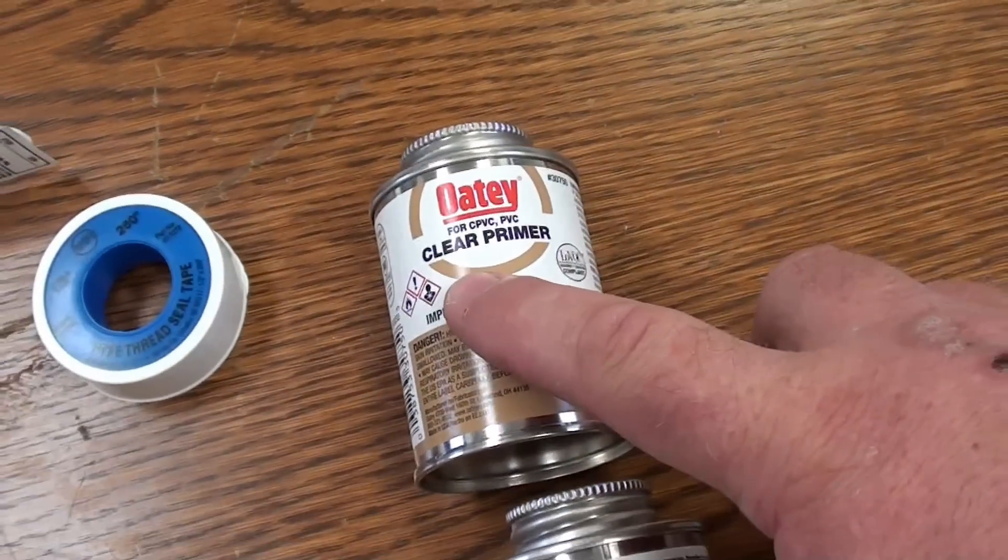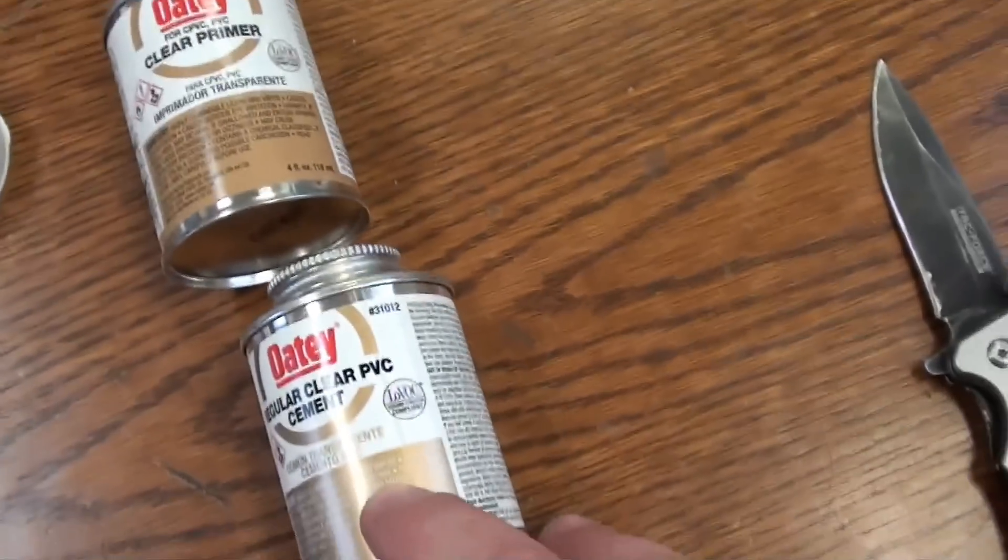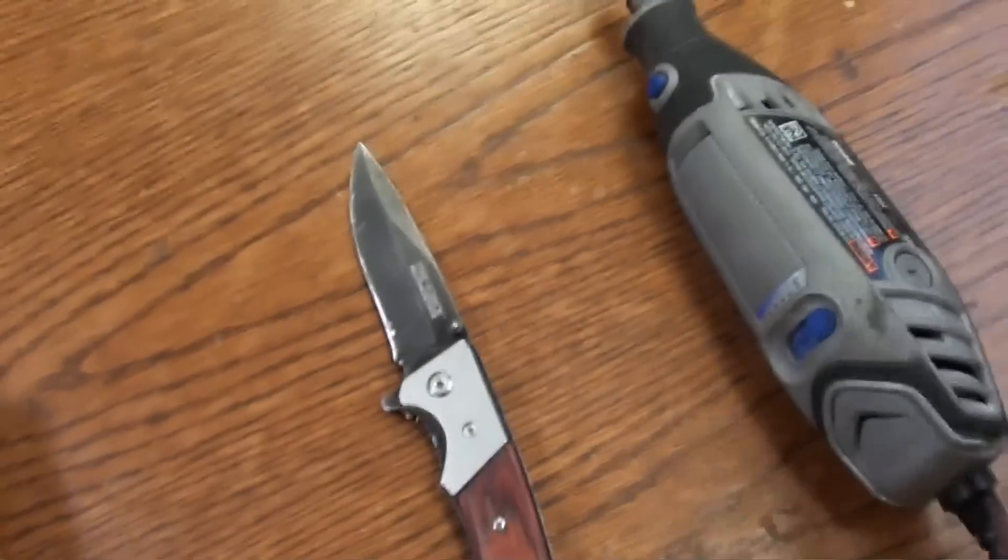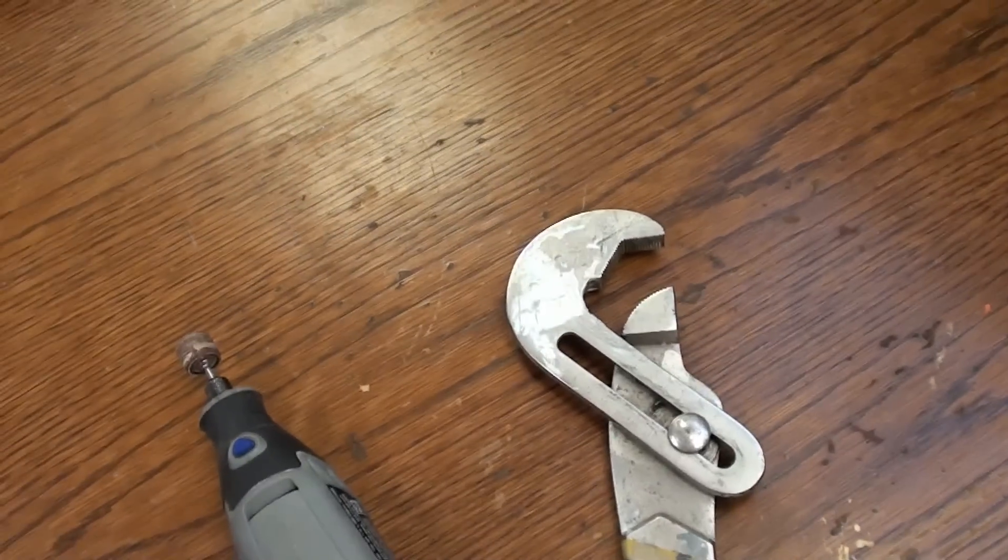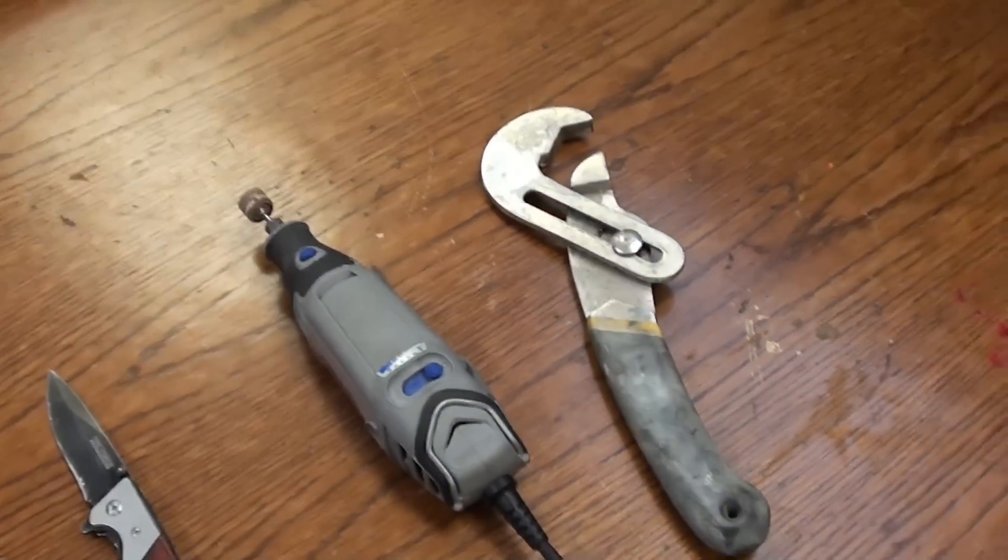We have the PVC primer, PVC cement. And then we're going to need a knife, a Dremel with a sanding drum, and a wrench. Let's begin.